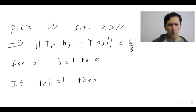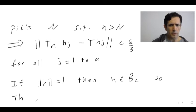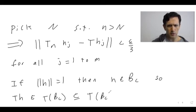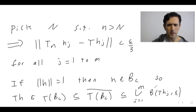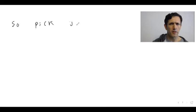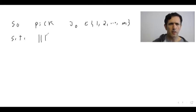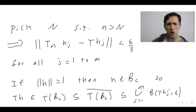So if H has norm equal to one, then obviously H is in BC. So TH is in T of BC, which is obviously a subset of the closure, which is a subset of this finite cover. So we can fix J zero where TH minus T(HJ zero) is less than epsilon, since TH is in one of these balls.